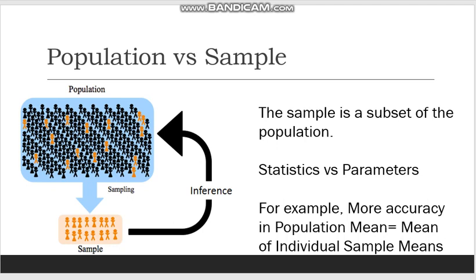One example would be the calculation of mean. Ideally, the mean of the sample — which is a statistic — should be the same as the mean of the population — which is a parameter. This rarely happens, which is why researchers use multiple samples from a single population and find out their respective means. Then they find the mean of these individual means to reach a more conclusive result about the population's parameter.